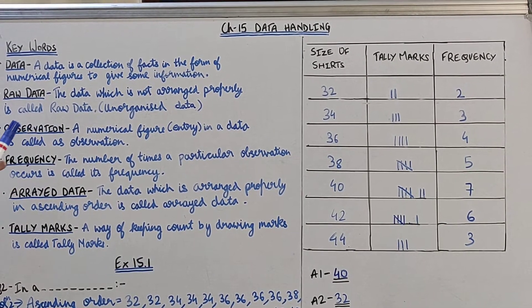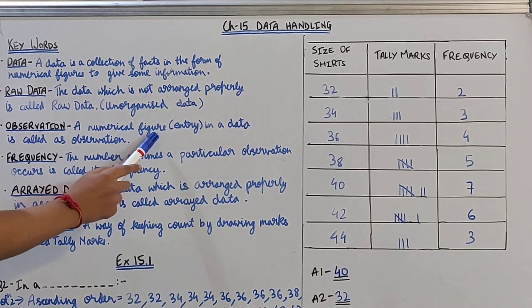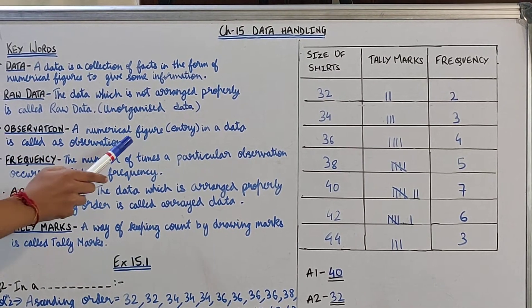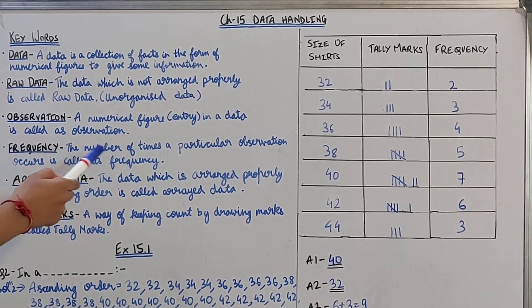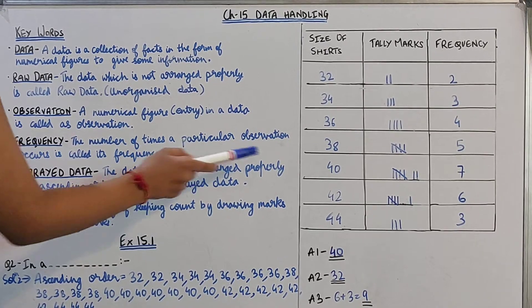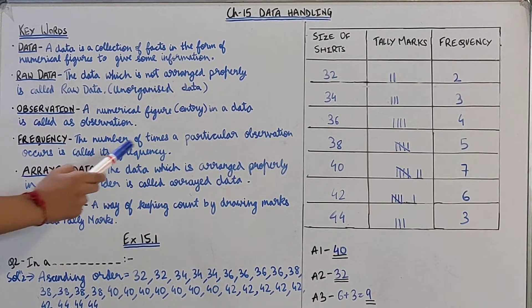Then observation. A numerical figure or entry in a data is called an observation. Then frequency. The number of times a particular observation occurs is called its frequency.